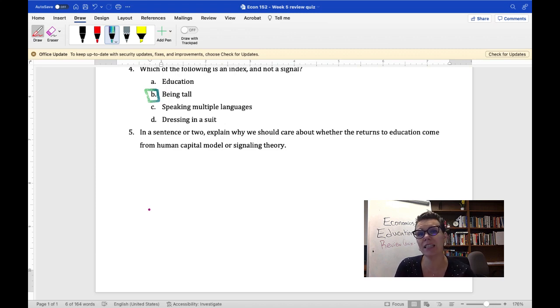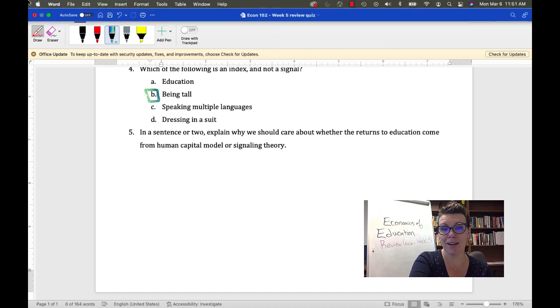Whereas if it's signaling theory, it doesn't matter what a person learns so long as they get that signal. And then if it's human capital theory, then education makes everybody more successful and it's a positive externality good. Whereas if it's signaling theory, then all the returns to education are private and there's not a rationale for government subsidy. So let's go ahead and graph that and we can talk about it a little more.